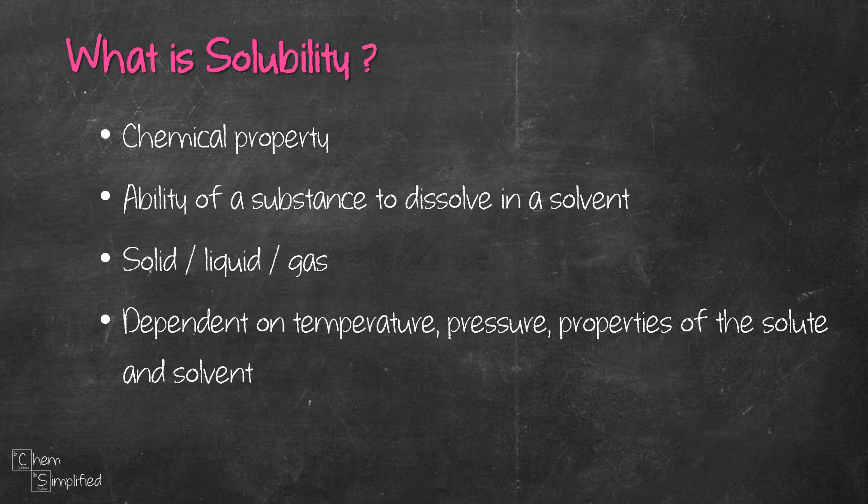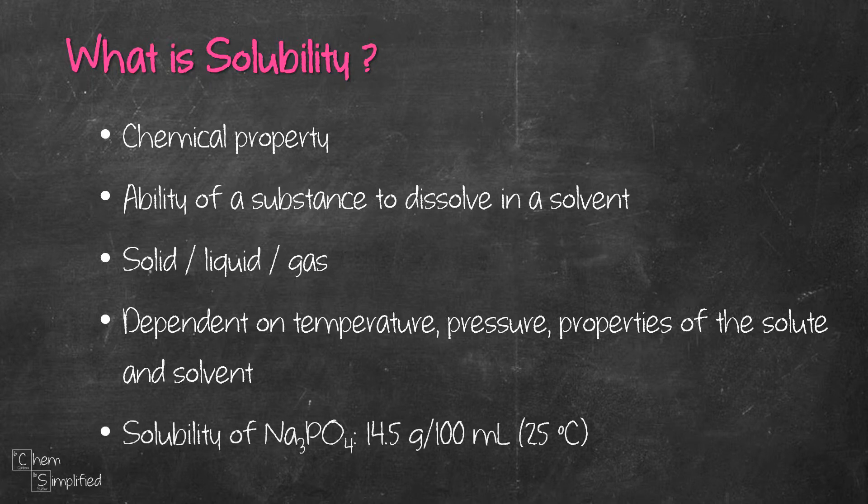That's why, sometimes when given the solubility of a substance, you'll see it expressed in grams of that substance in a specific amount of the solvent, for example, 100 ml at a specific temperature like 25 degrees Celsius. That means, at 25 degrees Celsius, in 100 ml of water, maximum amount of Na3PO4 that can dissolve is 14.5 grams.